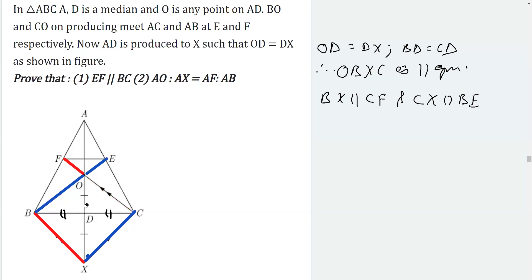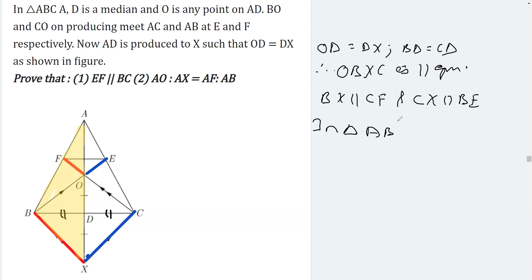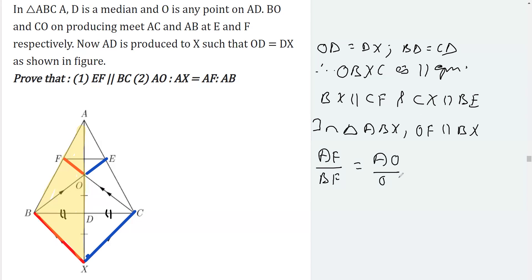Now we are going to apply BPT. Consider triangle ABX — here OF is parallel to BX, which we have proved since parts of parallel lines are parallel. So by the Basic Proportionality Theorem applied to triangle ABX, we get AF over BF equals AO over OX. This is equation 1.